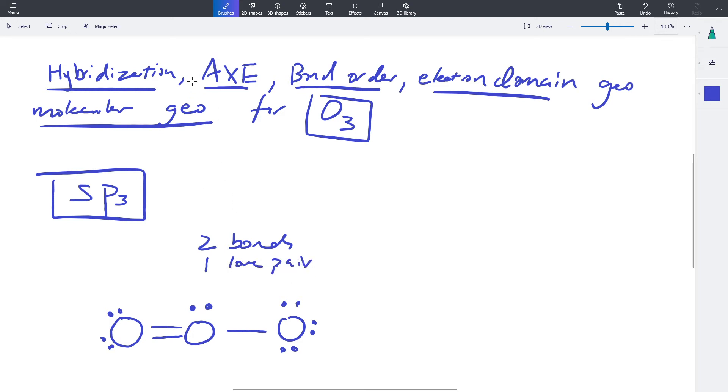So in X, which is like kind of a shorthand for describing this, we'd have A, which means there's a central atom. So that never changes, essentially. X is the bonds. So we put two and then E, that's the lone pairs. So you would just leave it as E. You don't have to write a one, although I don't think it makes a difference.